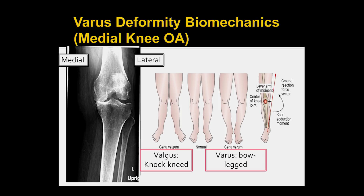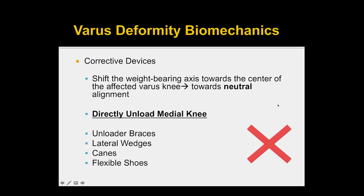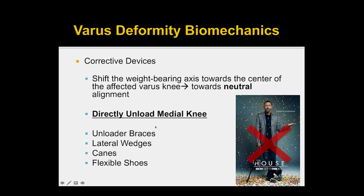There are also biomechanically-based therapies, especially for patients with varus deformity — bow-legged patients — who have joint space narrowing in the medial compartment of the knee. Much of what we use shifts the center of force through that joint away from the affected portion toward a more neutral stance. That includes braces, lateral wedges in the shoes, canes, and flexible shoes. The cane is actually supposed to be used on the opposite side to where you have knee arthritis, and we're really trying to get that knee back towards neutral alignment.